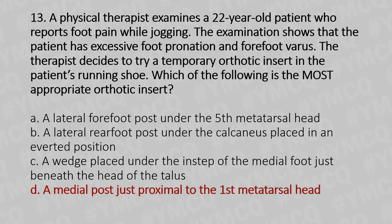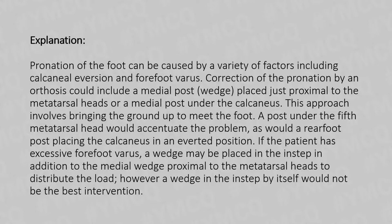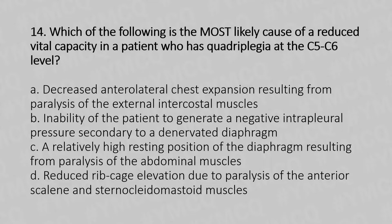The answer is Option D: a medial post just proximal to the first metatarsal head. Pronation of the foot can be caused by a variety of factors including calcaneal eversion and forefoot varus. Correction of pronation by orthosis could include a medial post placed just proximal to the metatarsal head or a medial post under the calcaneus. This approach involves bringing the ground up to meet the foot. A post under the fifth metatarsal head would worsen the problem, as would a rear foot post placing the calcaneus in an everted position. If the patient has excessive forefoot varus, a wedge may be placed in the instep in addition to the medial wedge proximal to the metatarsal head, but a wedge in the instep by itself would not be the best intervention.